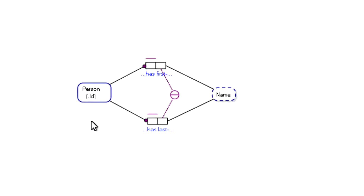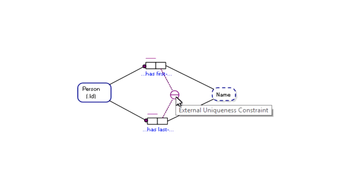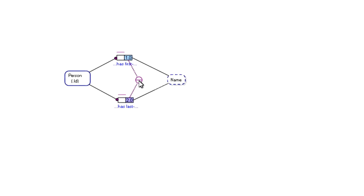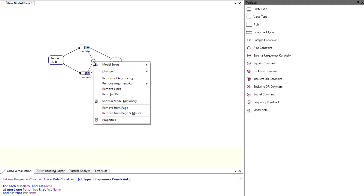If we wanted to, we could say that each person is uniquely identified by their first name and their last name. To do that, we need to change this external uniqueness constraint to be the preferred reference scheme identifier for the entity type. So let's just right click on that and go to properties.